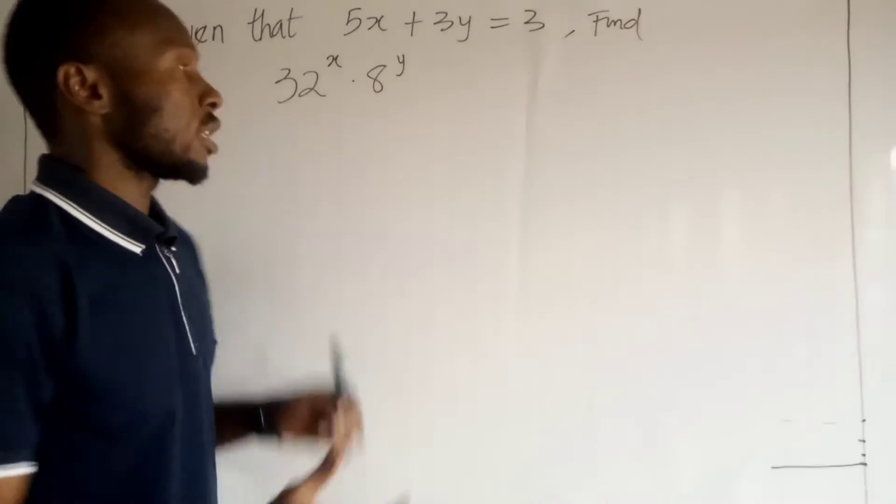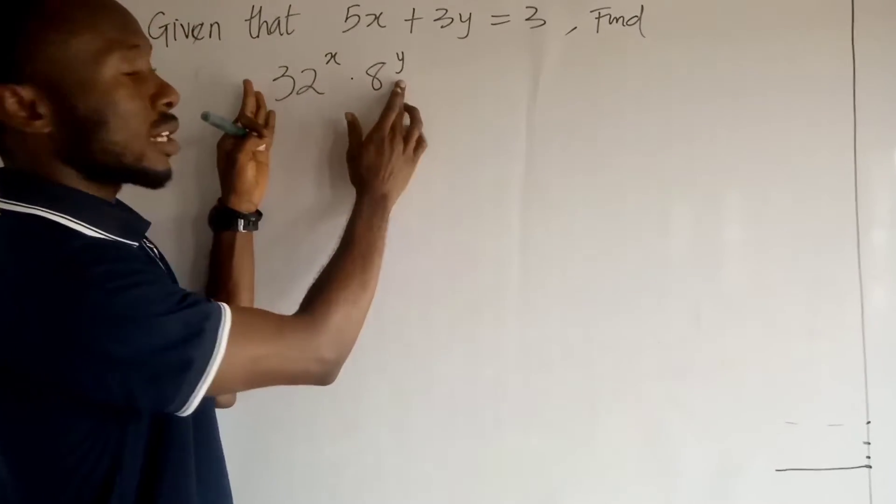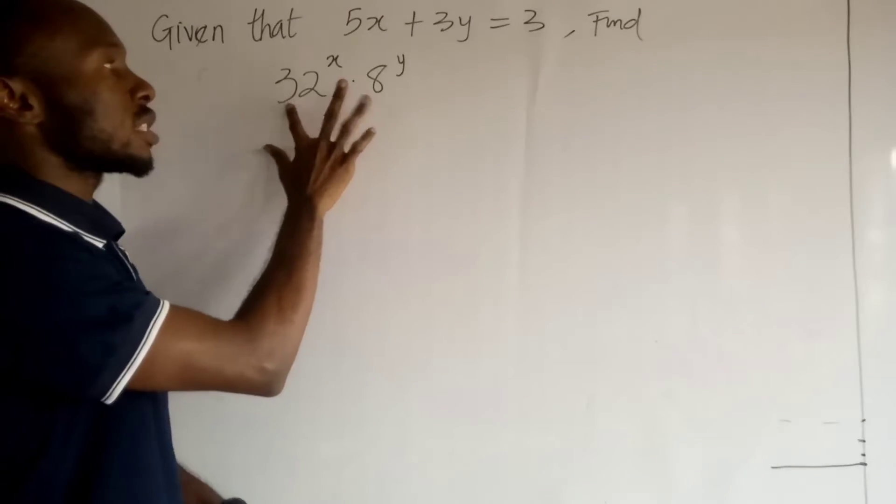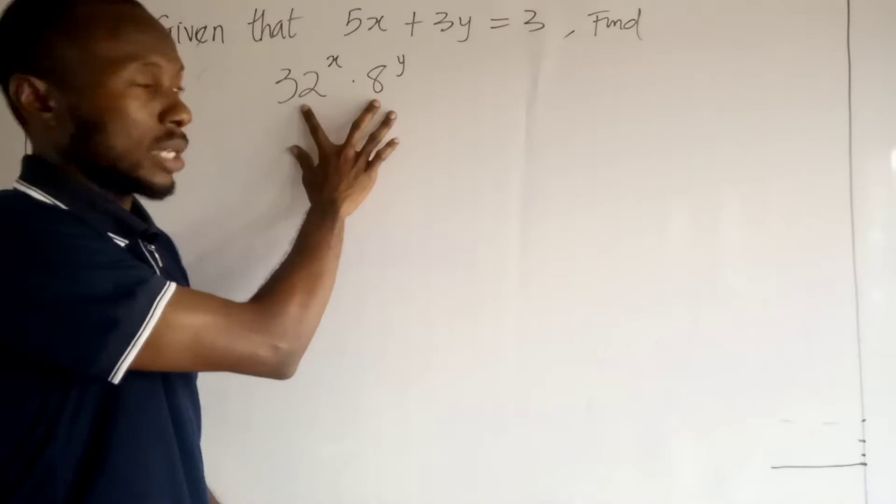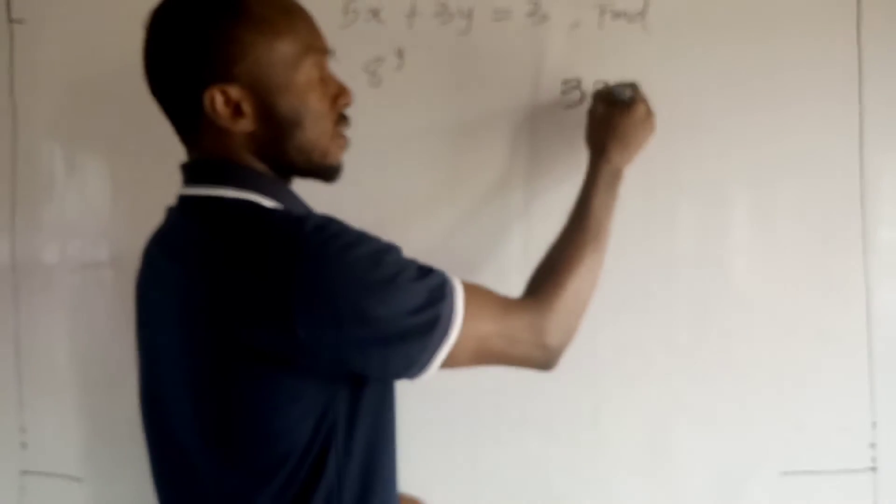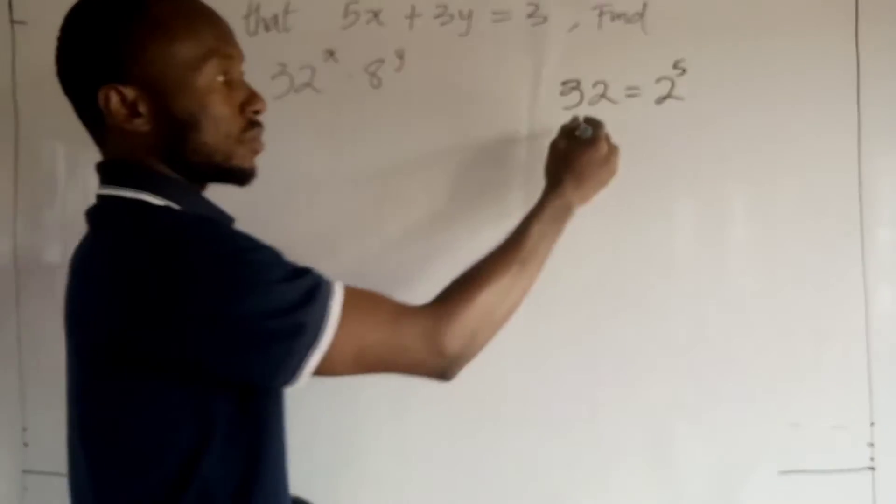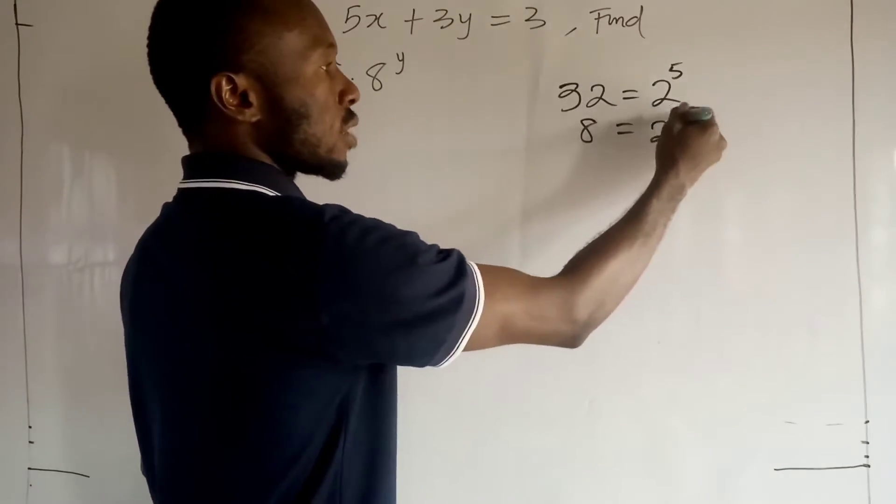Now, the first thing I want us to do, we need to start from this exponential expression right here. So, we know we can always reduce these guys to their lowest common base. And remember, 32 can also be written as 2 to the power 5, and 8 can also be written as 2 to the power 3.